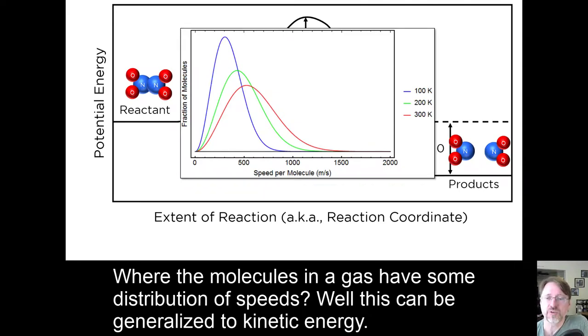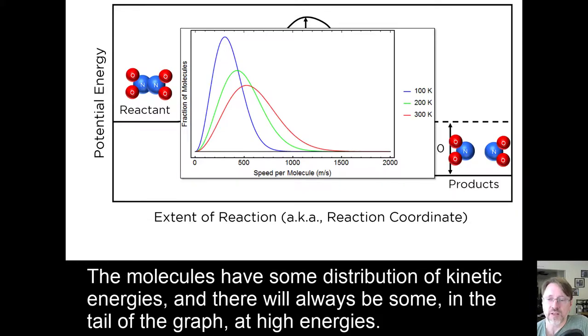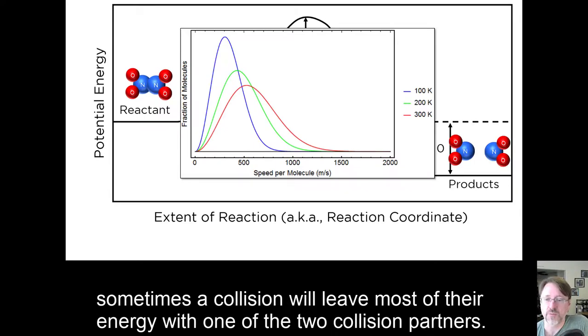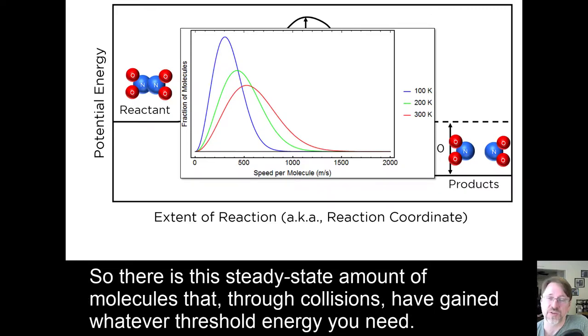Well, this can be generalized to kinetic energy. The molecules have some distribution of kinetic energies, and there will always be some in the tail of the graph at high energies. They get that energy by colliding with other molecules and exchanging energy with them. Sometimes a collision will leave most of their energy with one of the two collision partners, so there is a steady-state amount of molecules that, through collisions, have gained whatever threshold energy you need.